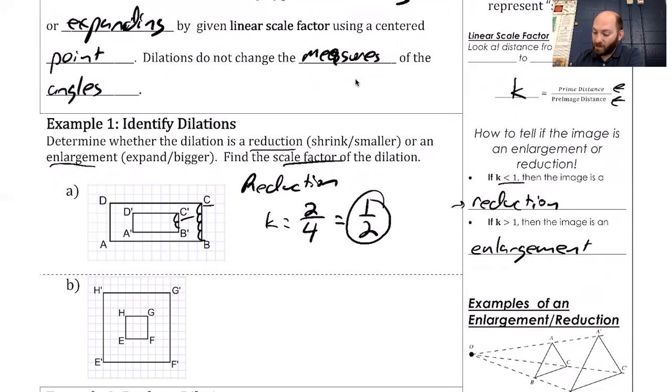In B, you can see how it's getting larger. It's going from this small square or rectangle to the big one. So we have an enlargement. I want to find the scale factor now. I'm going to do the prime distance: one, two, three, four, five, six, seven, eight, nine. My original pre-image: one, two, three.